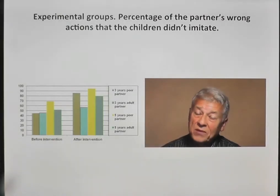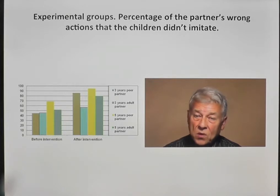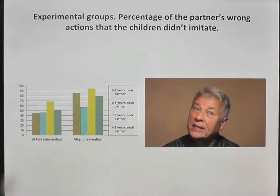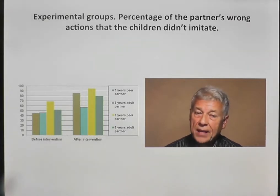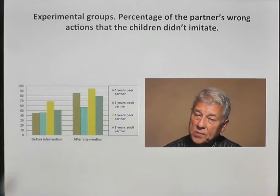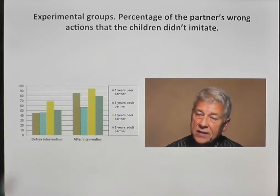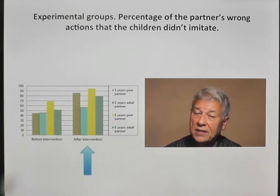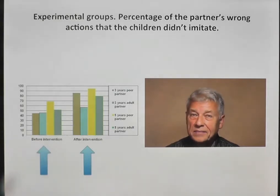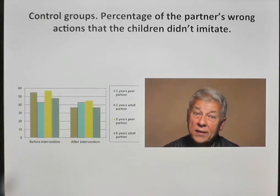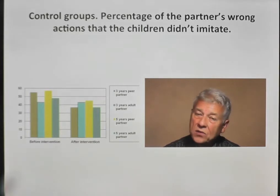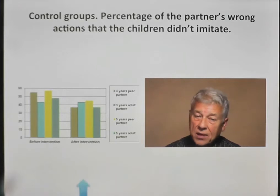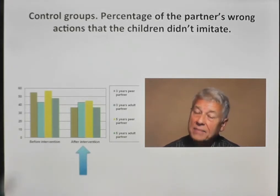On this graph, performance of children in the experimental groups on the Luria Hand Game tests before and after the intervention is shown. As we can see, in both age groups, the percentages of the partner's wrong actions that the children did not imitate after the intervention became significantly larger than they were before the intervention. In contrast, in the control groups, the percentages of the partner's wrong actions that the children did not imitate either remained the same or decreased compared to those at the beginning of the program.